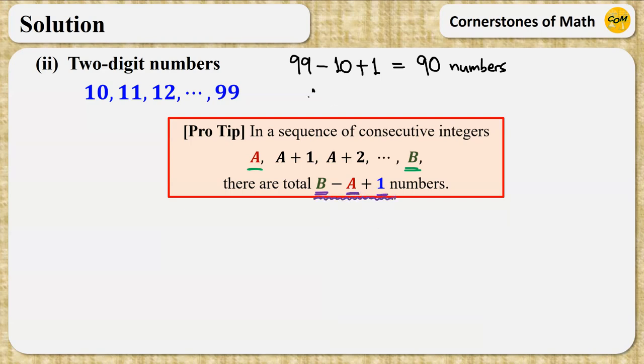So back to the problem, the 2-digit numbers occupy 2 times 90, so 180 digits.